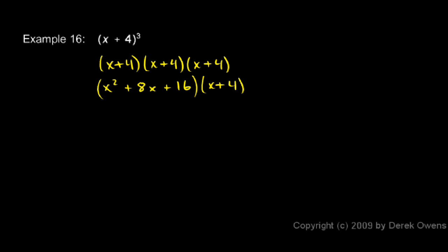Now I have to multiply each of these three terms by each of these two. Let's be systematic. I'll start with x squared and multiply x squared times x, which is x cubed, and x squared times 4, which is 4x squared.